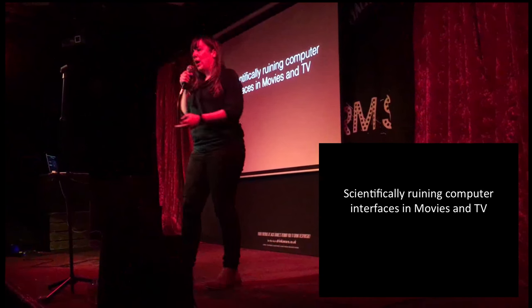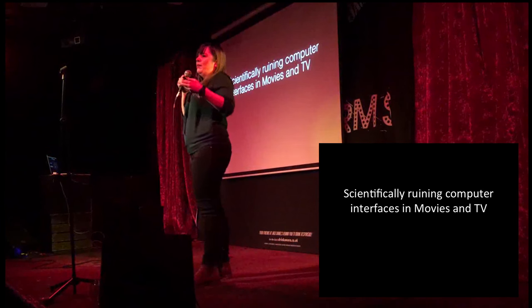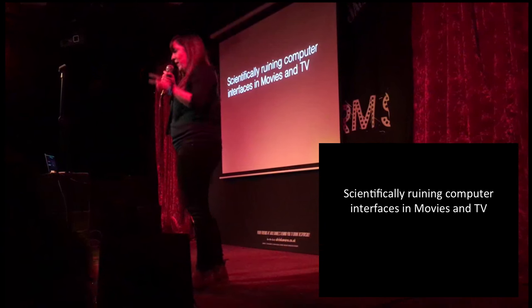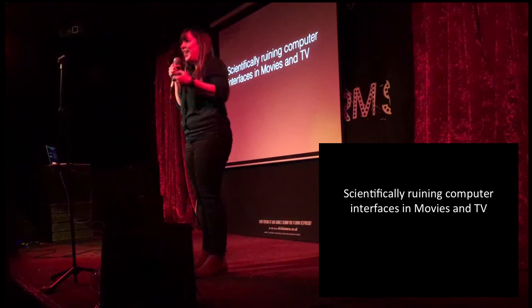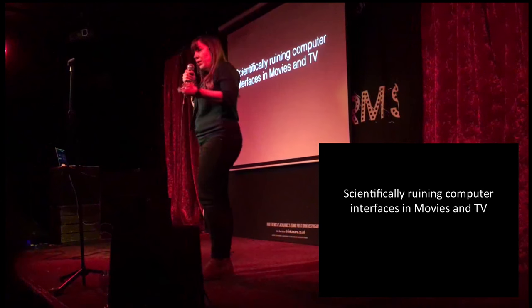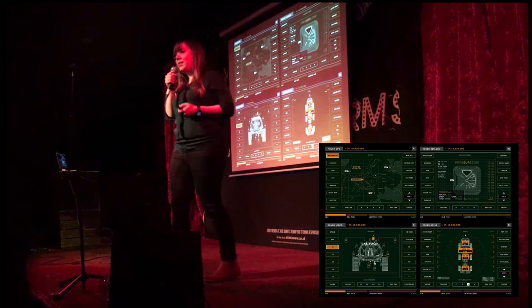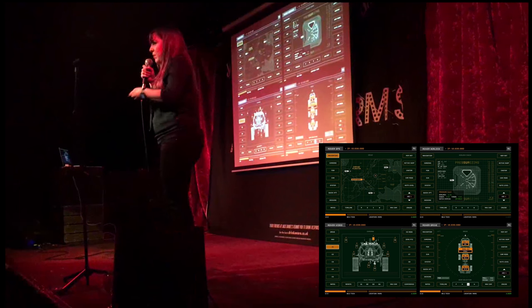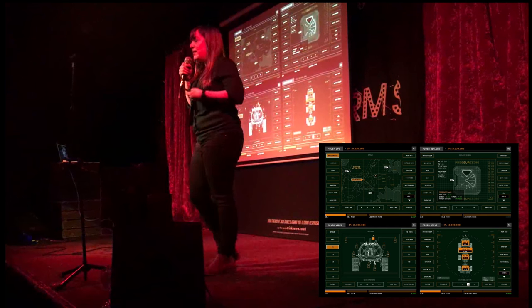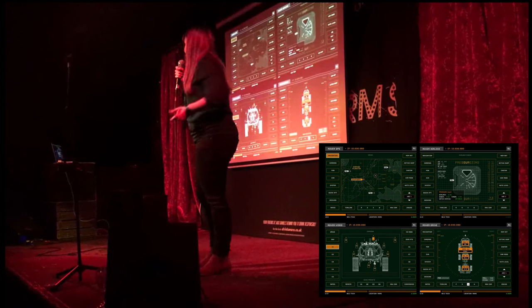We're a very technologically astute population now, and that means people making films and TV can no longer make interfaces in MS Paint — they have to try harder because we all know what things look like. A lot of films actually employ people to make interfaces. One of the most famous examples is probably The Martian. They got a team in, made hundreds of different interfaces, actually met with NASA to discuss design standards and what science needed to be represented. By doing this, they came up with something scientific, accurate, and precise — it made the film what it was.